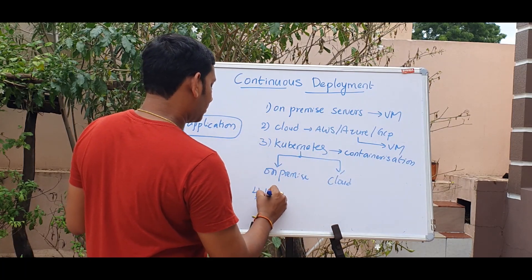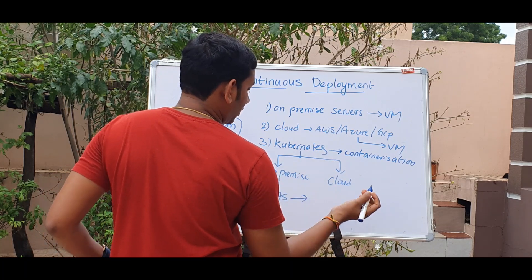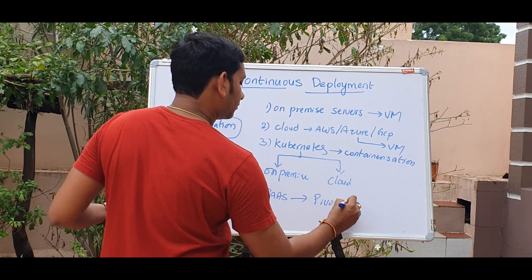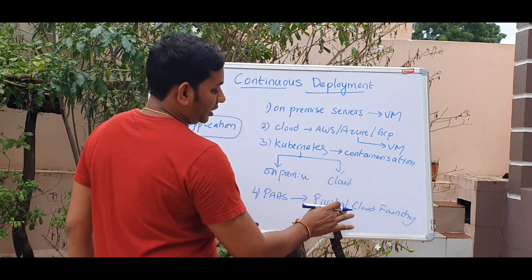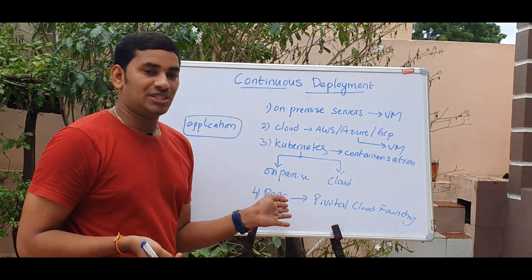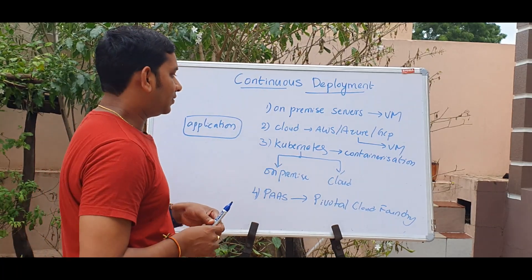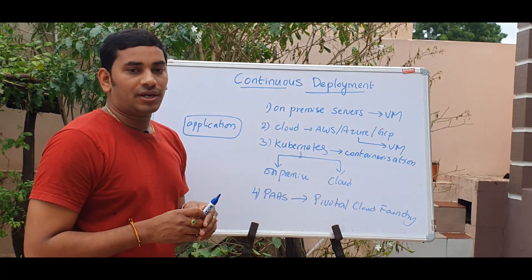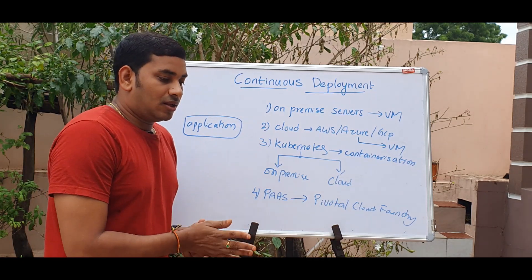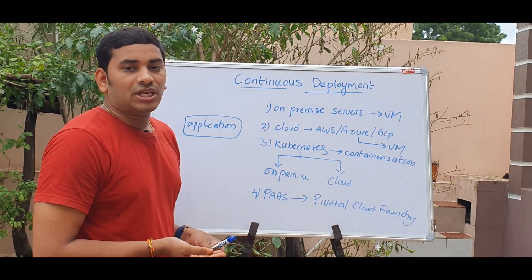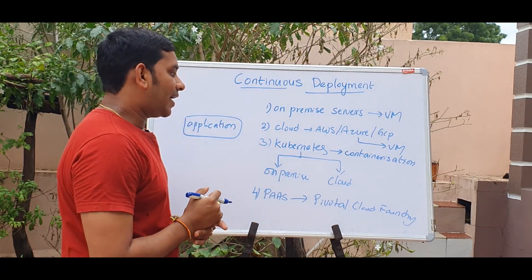There are also PaaS platforms, something like Pivotal Cloud Foundry. There are two types of applications: either monolithic or microservices. Monolithic applications are deployed mostly 99% on VMs, while microservices applications are deployed on Kubernetes.